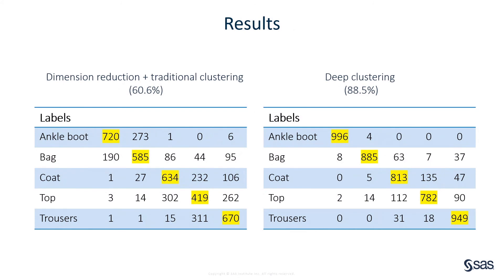Finally, let's look at the clustering accuracies from both methods. The first two-step method correctly assigned 60.6% of the images, and the accuracy of deep clustering is 88.5%. In the tables, we find that deep clustering outperforms the other methods in all five classes, giving us a more reasonable clustering outcome. In this video, we introduced the new deep clustering method supported by SAS and compared its results with other methods. You can find more information on the SAS homepage. Thanks for watching.